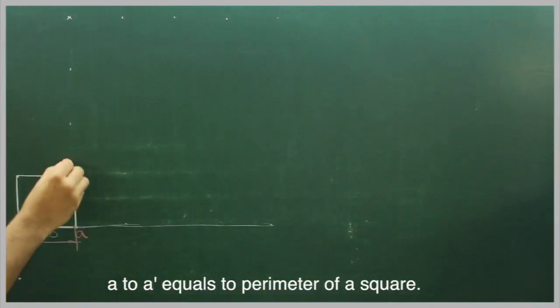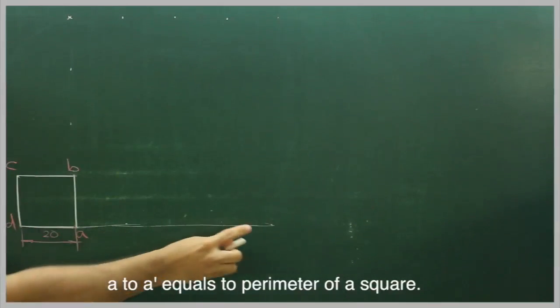We name this as square ABCD and divide this into 4 parts: 1, 2, 3, 4.